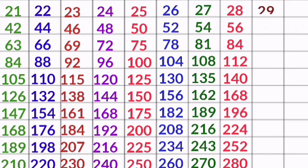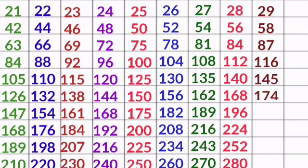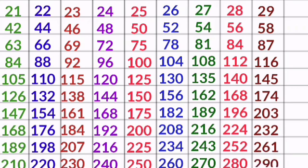29 1s are 29, 29 2s are 58, 29 3s are 87, 29 4s are 116, 29 5s are 145, 29 6s are 174, 29 7s are 203, 29 8s are 232, 29 9s are 261, 29 10s are 290.